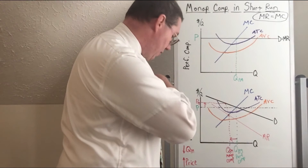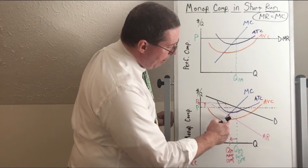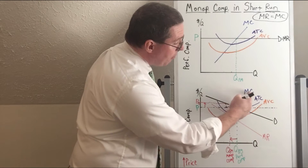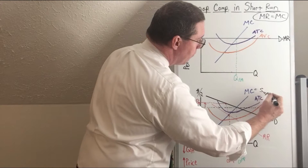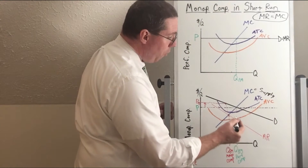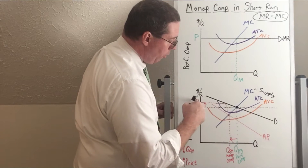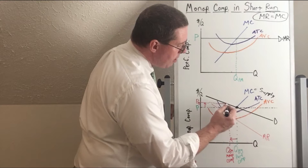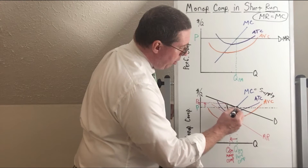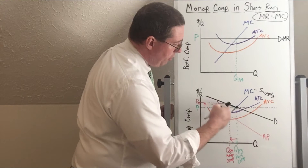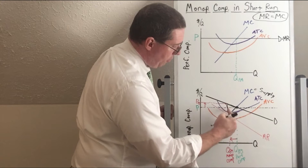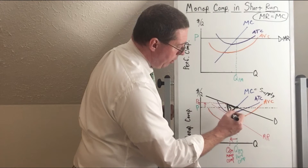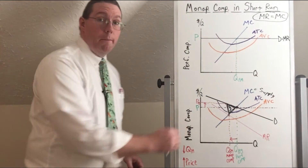Notice that at the profit maximizing quantity, if we take the profit maximizing quantity up to the demand curve — and remember that the marginal cost curve is the supply curve in that particular industry — this should actually be the price, which is lower than the profit maximizing price. But because the monopolistic competitor is charging a higher price, you can see a triangle that is above the supply curve, below the demand curve. We've got this higher price with a lower quantity, and what you're seeing here is a dead weight loss — DWL — in the market for a monopolistic competitor.